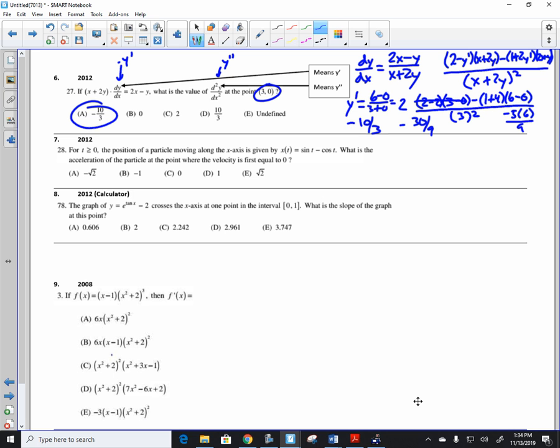Okay, next one. This is the position. What is the acceleration when the velocity first is equal to 0? Well, the velocity is the derivative, which is cosine of t plus sine of t. So when is that equal to 0? Well, I've got to solve that. If we subtract sine of t, we get negative sine of sine of t equals cosine of t. We divide by cosine on both sides.